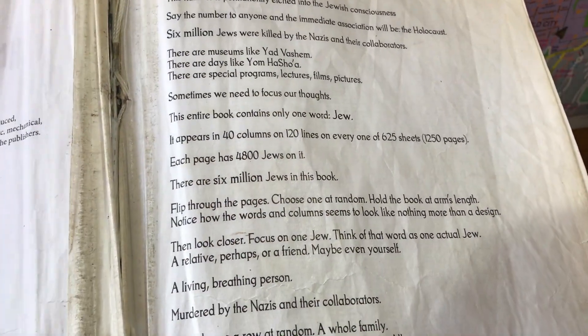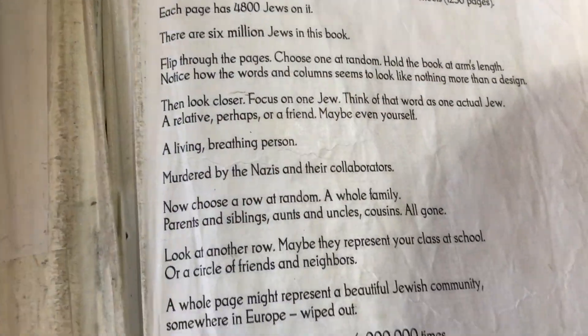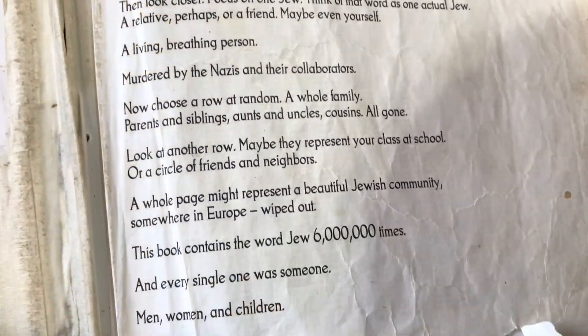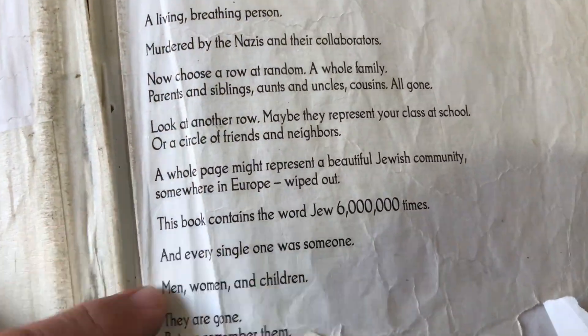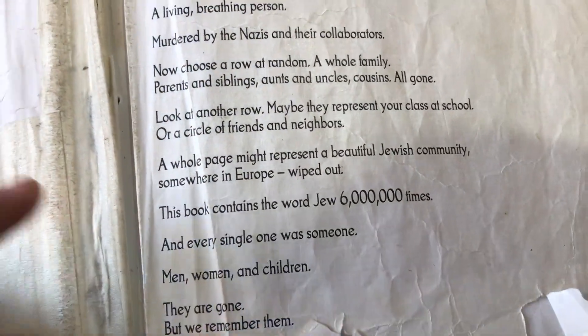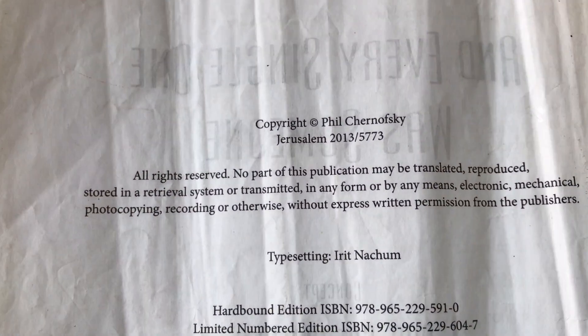The whole page may represent the beautiful Jewish communities of Europe. This book contains the word Jew 6 million times. And every single one was someone — men, women, and children. And they are gone. But we remember.